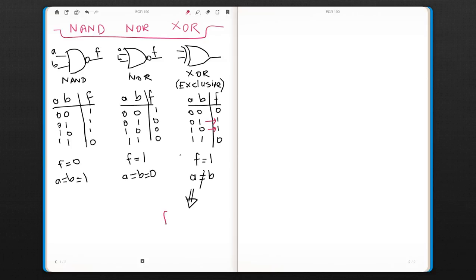Because the function is going to be the minterms of 1 and 2. And those are A complement B or A B complement. So that is the function for the XOR gate.